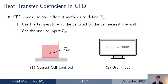Broadly speaking there are two different methods that CFD codes use to define the reference temperature. The first method is that the CFD code looks at the cell that's adjacent to the wall — that nearest cell — and uses the temperature at the centroid of that cell to define the reference temperature. For any general wall boundary, the CFD code will just look at the cell next to the wall and take the temperature there. The second method is to get the user to input a value for the reference temperature themselves, and then the CFD code can just use that.